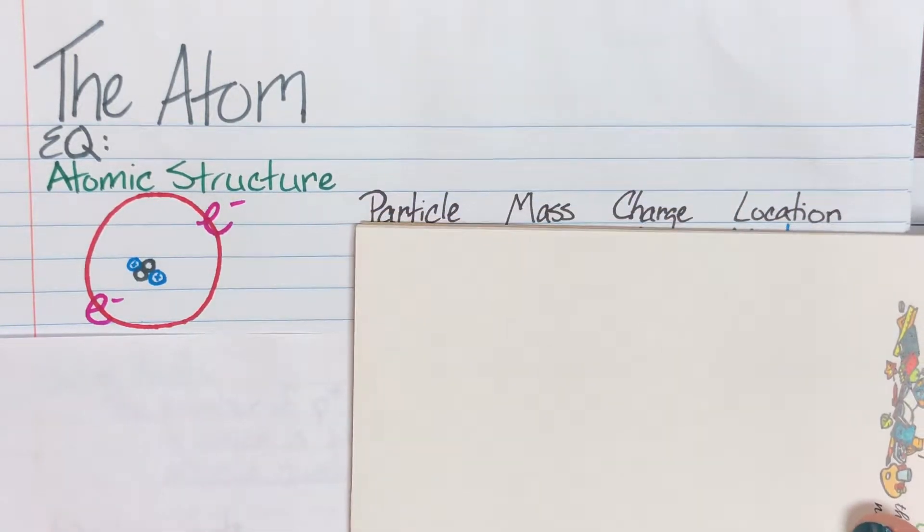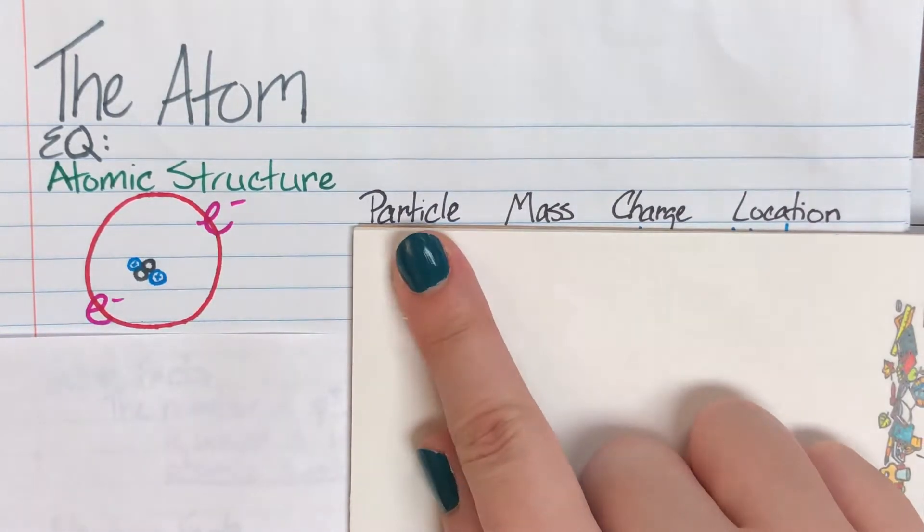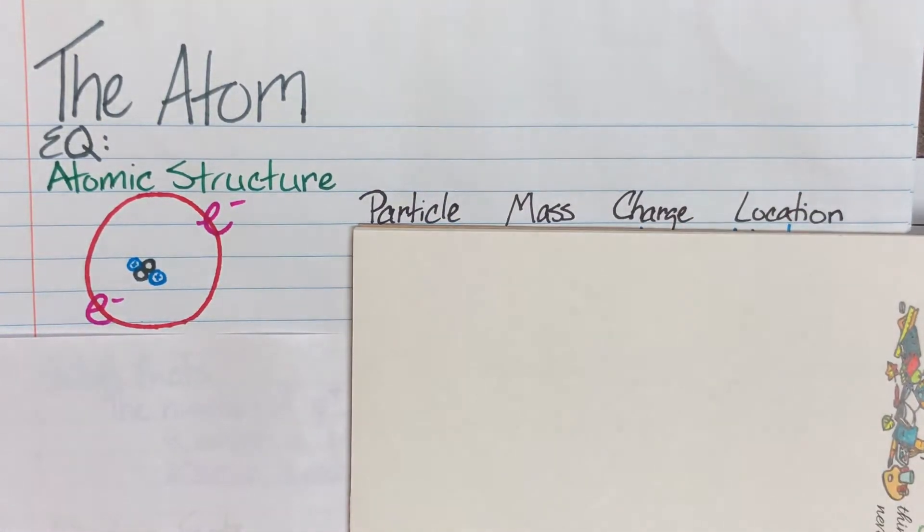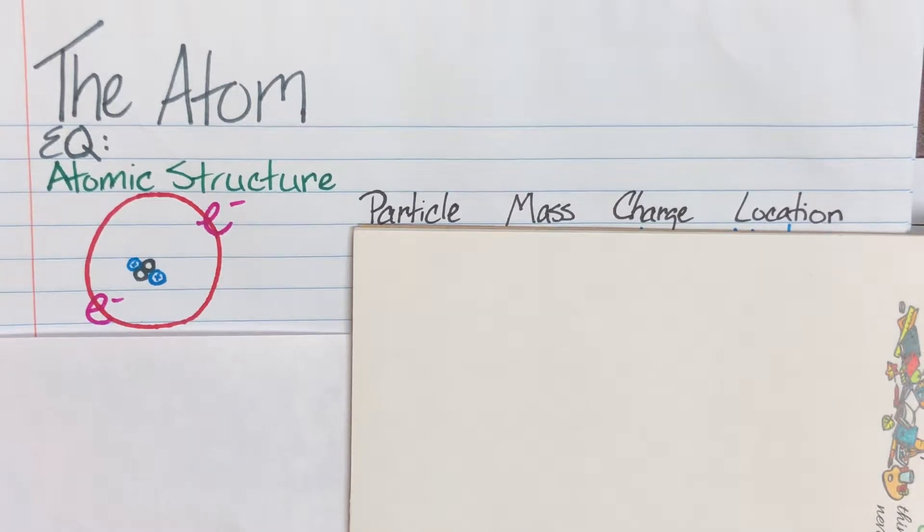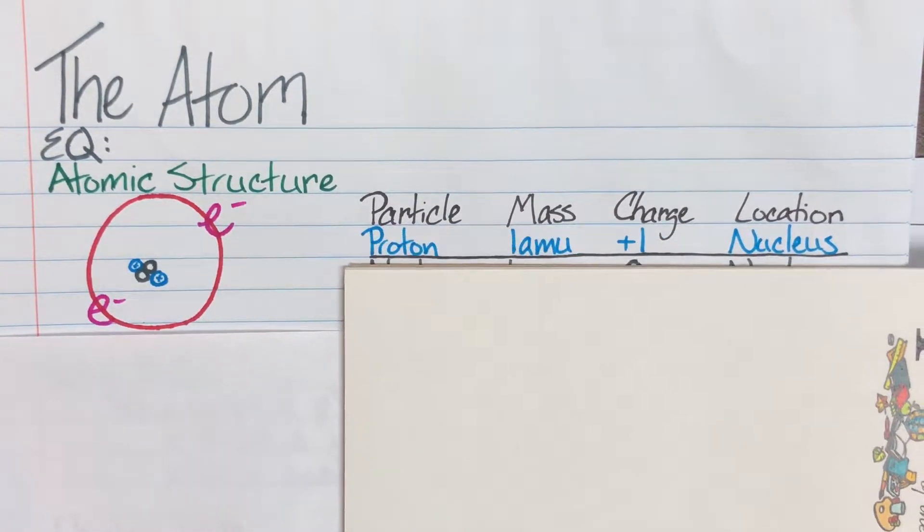So we're going to make a table to help us organize all of this information. Go ahead and label particle, mass, charge, and location on your table, and the very first particle that we are going to be talking about is going to be our proton.